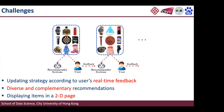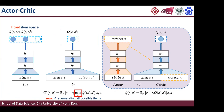Since recommending a two-dimensional page of items differs from ranking a one-dimensional list, there is also the challenge of how to place items properly within the page. We then propose the page-wise recommendation model. In this paper we use the actor-critic architecture, which can handle dynamic item spaces and reduce training time compared to traditional Deep Q-Networks. The question becomes how to design the actor and critic components.